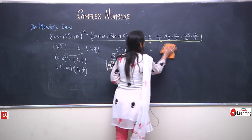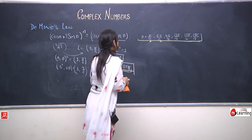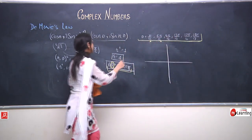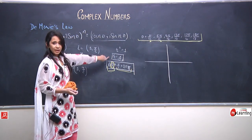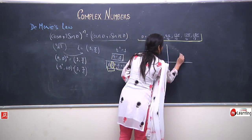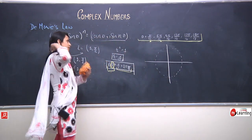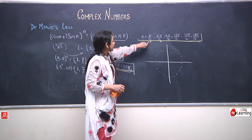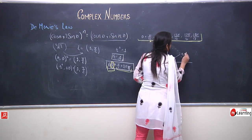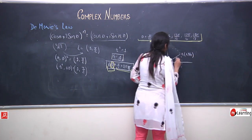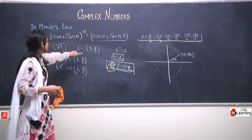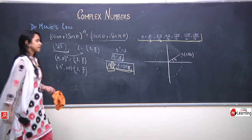Let us plot all these values geometrically in our polar coordinates. The modulus is 1 for all values of theta, so I can plot a circle with radius 1. The first value of theta that satisfies the equation is pi by 12, which is 15 degrees. So z1 is (1, pi by 12) and this is the first solution of the equation.